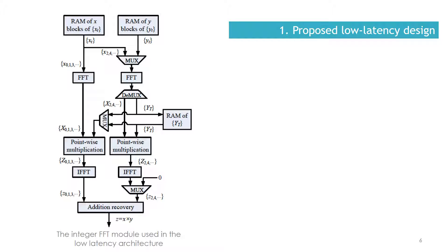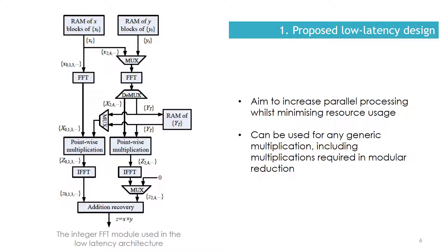The first low latency design incorporates a low latency FFT multiplier, and the architecture is shown on the left-hand side of the slide. To minimize latency, shared RAMs are used, and two serial FFT modules, two serial inverse FFT modules, and two pointwise multiplications are used in parallel to reduce the latency of the overall design. This design can be used for any generic multiplication, such as multiplications required in modular reduction.